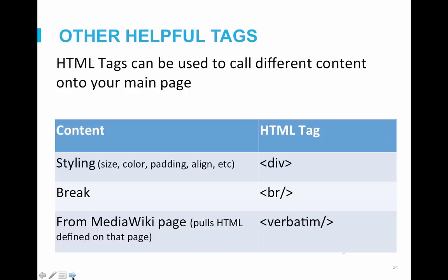Three other important HTML tags you'll encounter on complicated wiki pages are div, br, and verbatim. Div tags allow you to apply styling to content — they can be used for text, images, galleries, or other elements, and are often used to make text bigger or define alignment. Br stands for 'break' and is used to create a line break on the page, which can be helpful after an image, table, or gallery. Verbatim essentially applies HTML code from a MediaWiki page directly on the page where the tag is used — like a template, but it can use HTML that is not normally allowed.